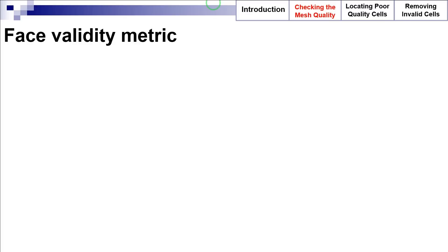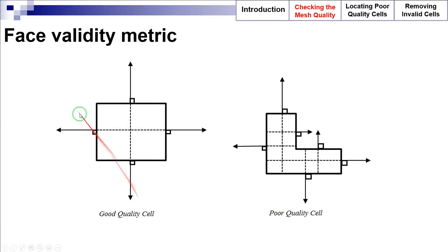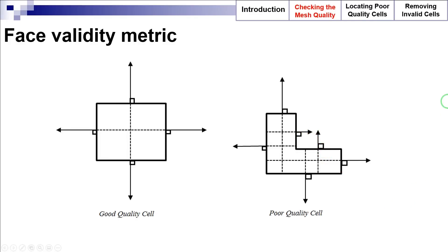The face validity metric is a measure of correctness of the face normals relative to the cell centroid to which they are attached. As you can observe in these figures, in a good quality cell the face normals are pointing outwards with respect to the cell centroid, while in a cell of bad face validity, one or more face normals are pointing toward the cell centroid.